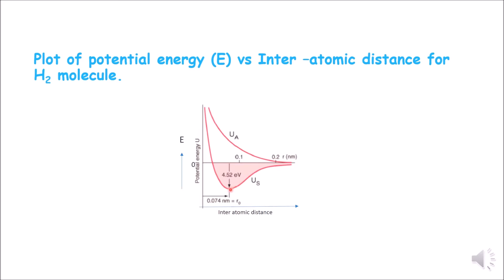At a particular point where the potential energy is minimum, the H2 Molecule forms because the atoms are very close to each other. If they come even closer, repulsion will start, and their potential energy will increase again. At this point, the interatomic distance is 0.074 nanometers.